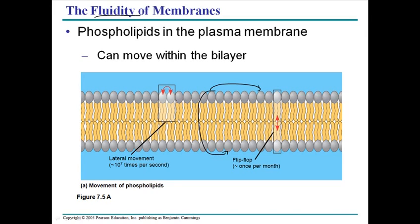Consider a lipid molecule — we'll label it number one. This molecule can move from one place to another laterally. This type of movement is called lateral movement, and it is very rapid, occurring at approximately 10 to the 7 times per second. So this kind of movement is taking place in every cell membrane constantly.